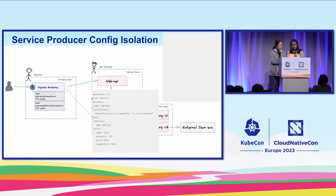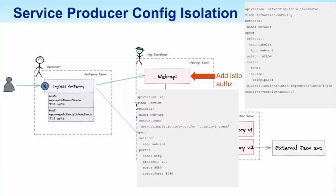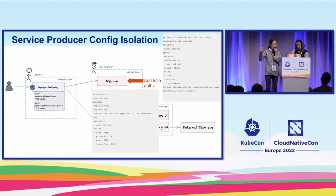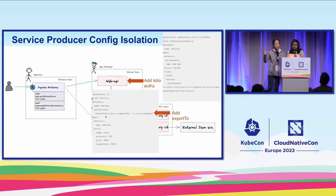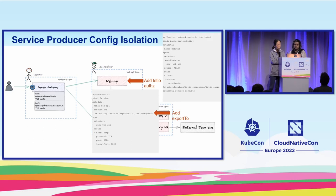We're going to talk about both the service consumer side and the service producer side. Just to clarify terminologies: when service application A calls application B, application A is the service consumer and application B is the service producer. In our simple example, the Istio ingress gateway is the consumer and the web API is the producer.